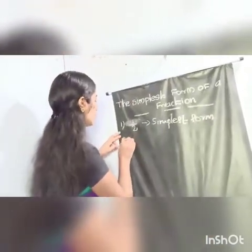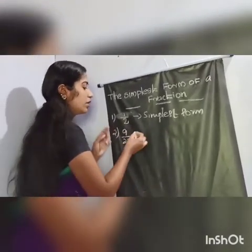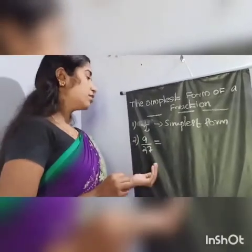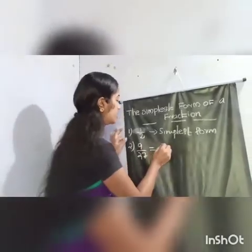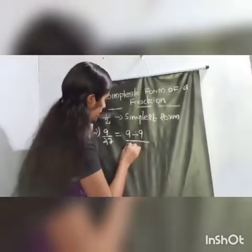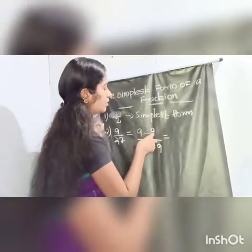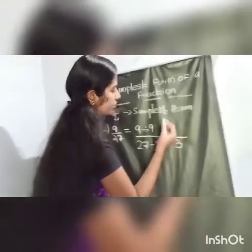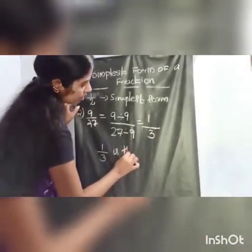Let's take another example: 9 by 27. This is not in its simplest form. So we divide both numerator and denominator by the same number — 9 divided by 9, by 27 divided by 9 — which equals 1 by 3. So 1 by 3 is the simplest form.